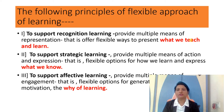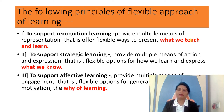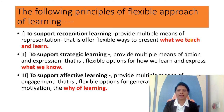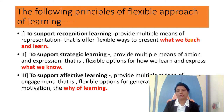The first principle is to support recognition learning — to provide multiple means of representation, offering flexible ways to present what we teach and learn. The second is to support strategic learning — to provide multiple means of action and expression, giving flexible options for how we learn and express what we know. The third is to support affective learning — to provide multiple means of engagement, offering flexible options for generating and sustaining motivation.